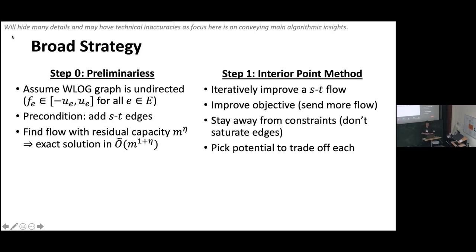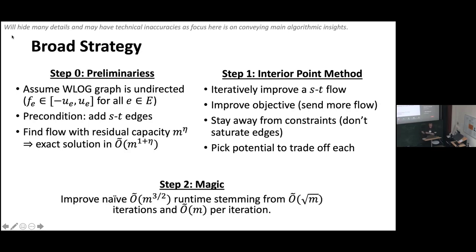We'll use the well-known fact that if we solve the maximum flow until the residual capacity is M^alpha, we can exactly solve the problem in remaining M^(1+alpha) time, by making the flow integer and running augmenting paths. Now we try to solve the problem with an interior point method. We maintain some ST flow and iteratively improve it. Like many interior point methods, there's a trade-off between trying to improve the objective — sending more flow — and staying away from the constraints, not getting too close to saturating capacities. A lot of ways of doing this naively give an M^(3/2) algorithm, from a root-M iteration algorithm where each iteration costs one electric flow computation.